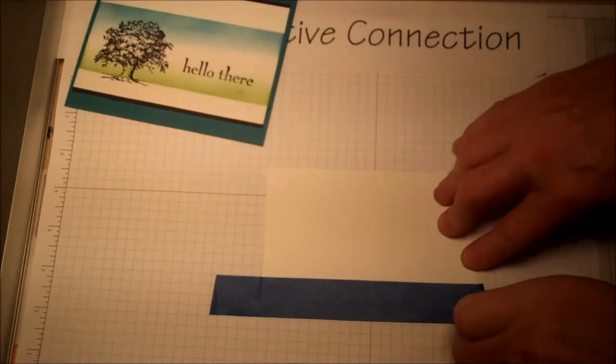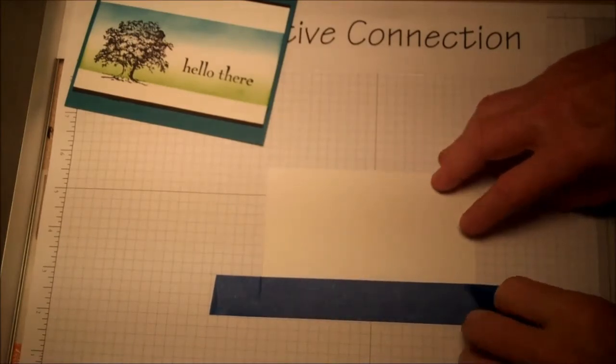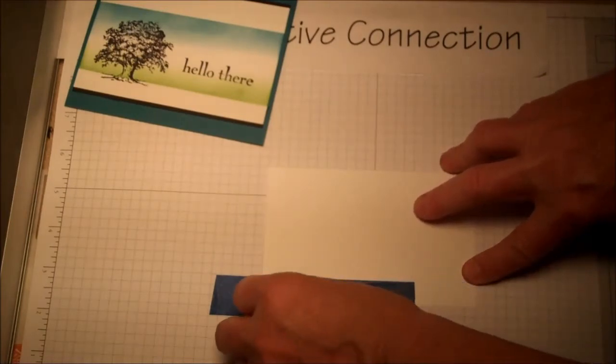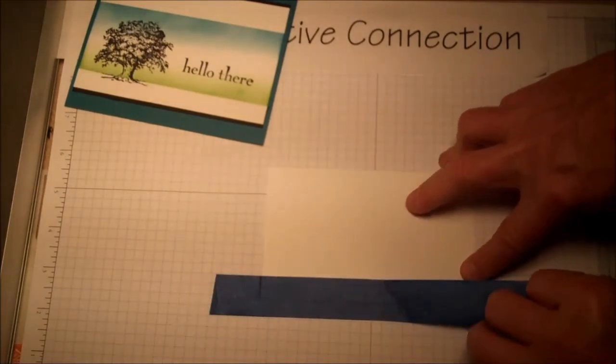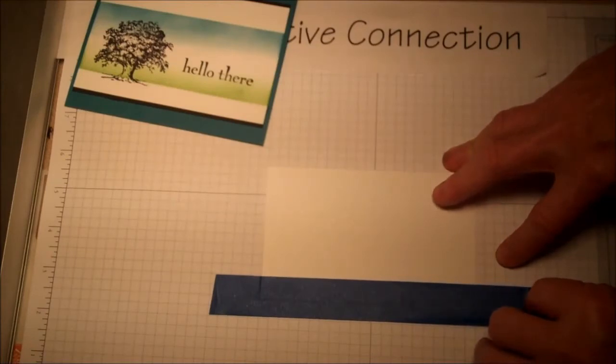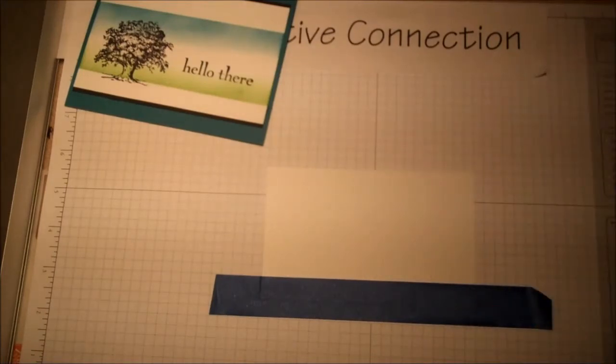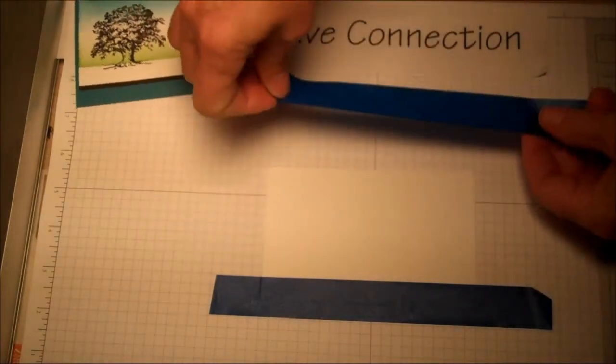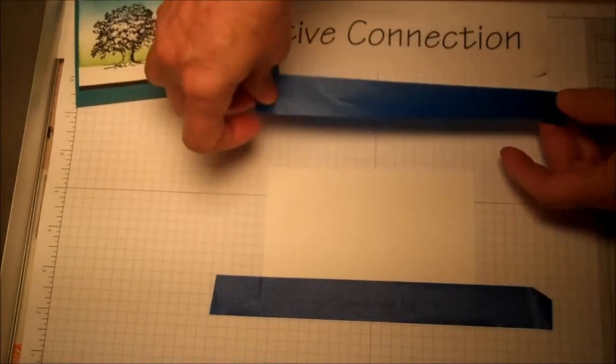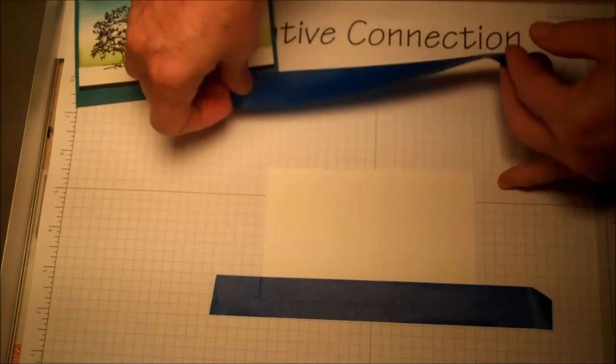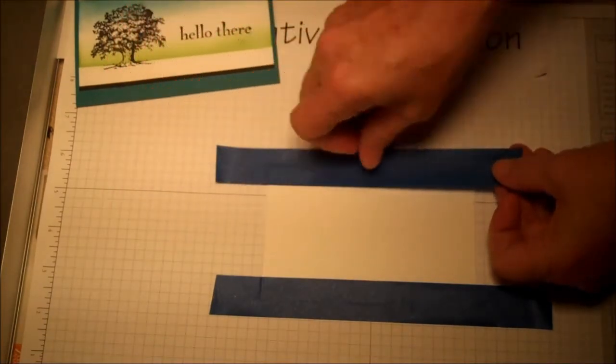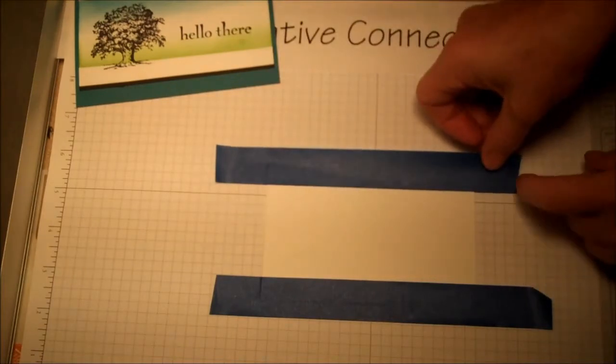Don't press it too hard down because it does have a tendency to stick really well, so just kind of place it and tap it. Get another piece a little bit longer than the card stock. Again on the top, I'm going to count down one, two, three lines. Set this piece of tape and just run it across to this side.